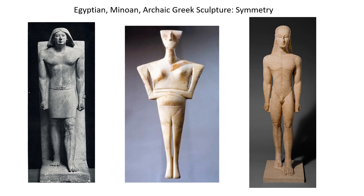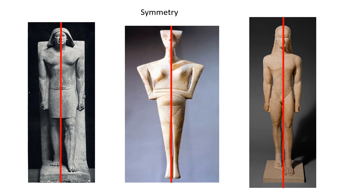These ancient Egyptian and Minoan and early Greek sculptures are symmetrical, meaning that each side is a mirror image of the other if you divide the figure in half, or very close. If you stand this way, you'll find it to be somewhat formal, maybe a little bit rigid, but that was the way these early civilizations sculpted the human body.